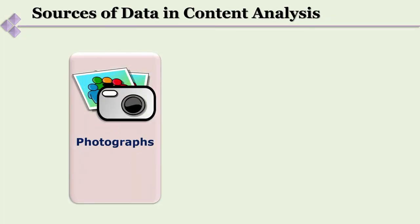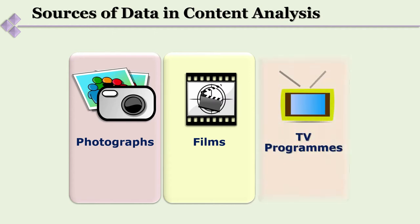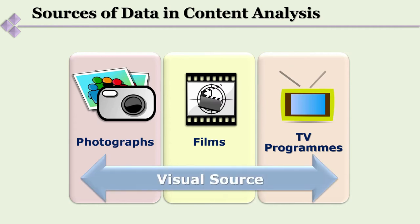Now let's look at some examples of where we get our content from. There is a large amount of content available today, which we label as information — available content that can be subjected to analysis. As a researcher using content analysis, one of the most commonly used sources is visuals — which can come from photographs, films, or television programs.